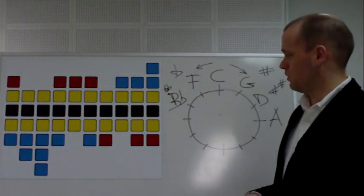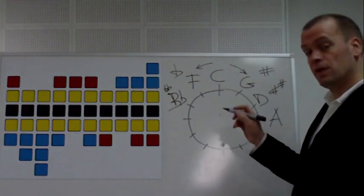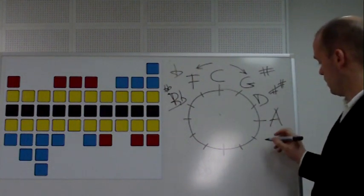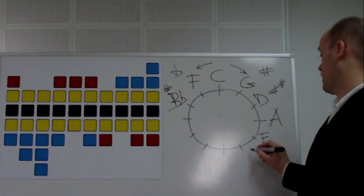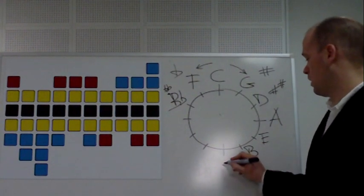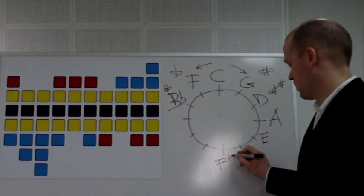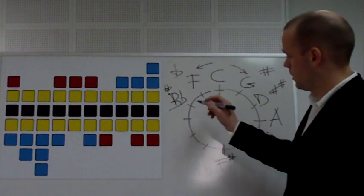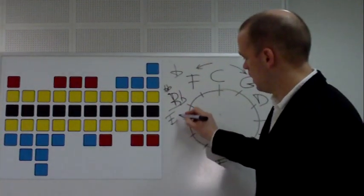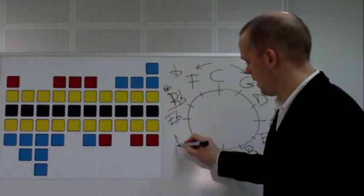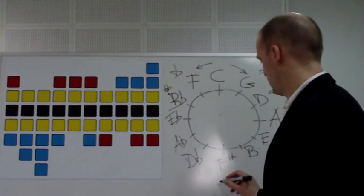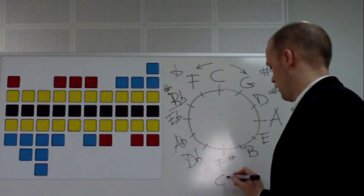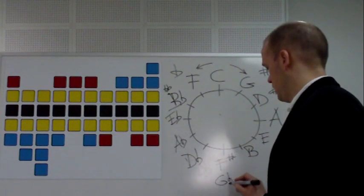As I said, I'll be getting back to the scales later. I'll finish the circle just for now. Here we get E, that is B, F sharp. And this side we get E flat, A flat, D flat. You can say here, G flat.